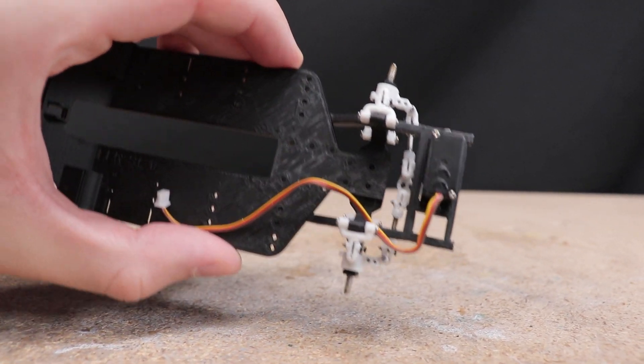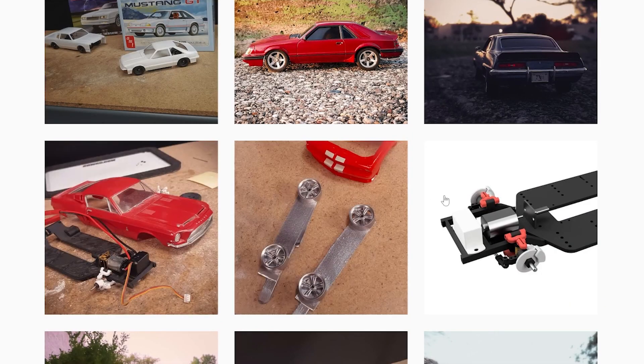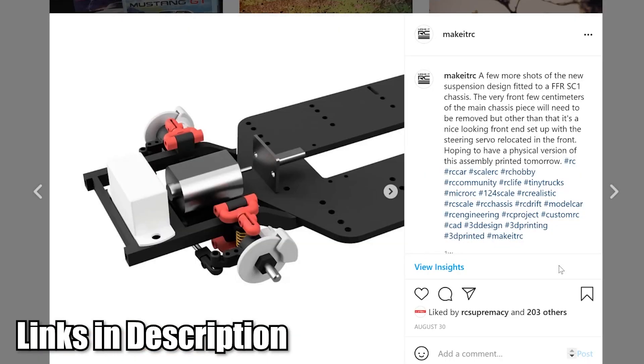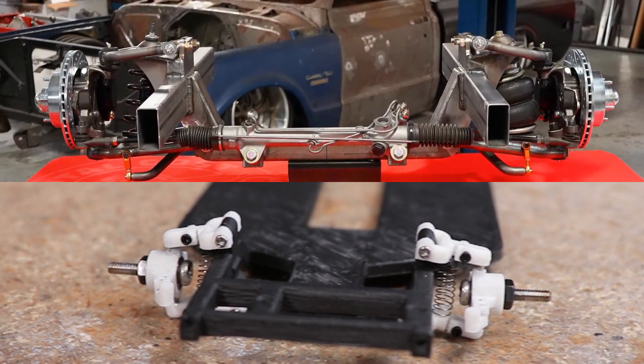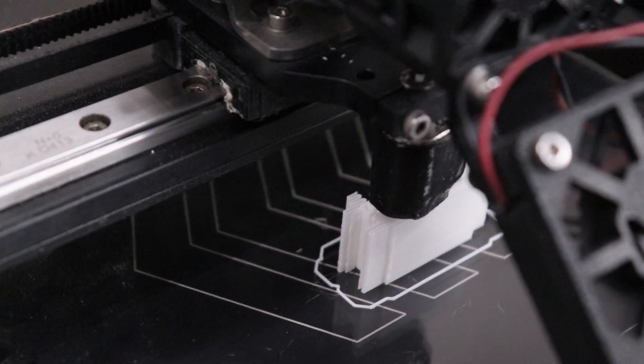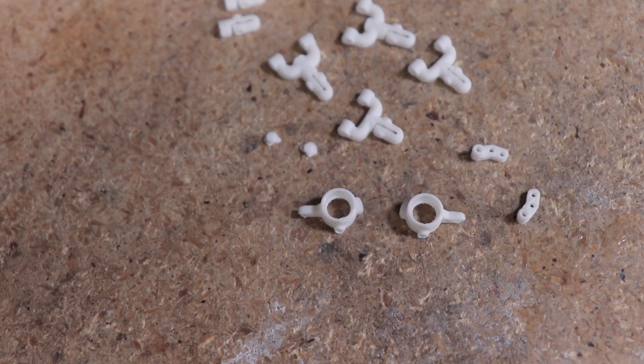If you've been following Make It RC on social media or have seen our community tab posts on YouTube, you've probably already seen this new front suspension assembly. The idea is to make it look as scale as possible while having all the parts be 3D printable on a typical FDM printer.